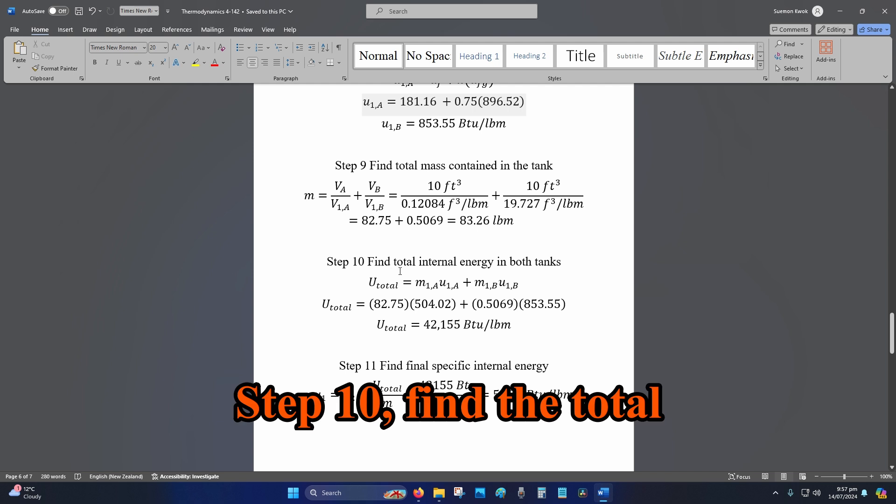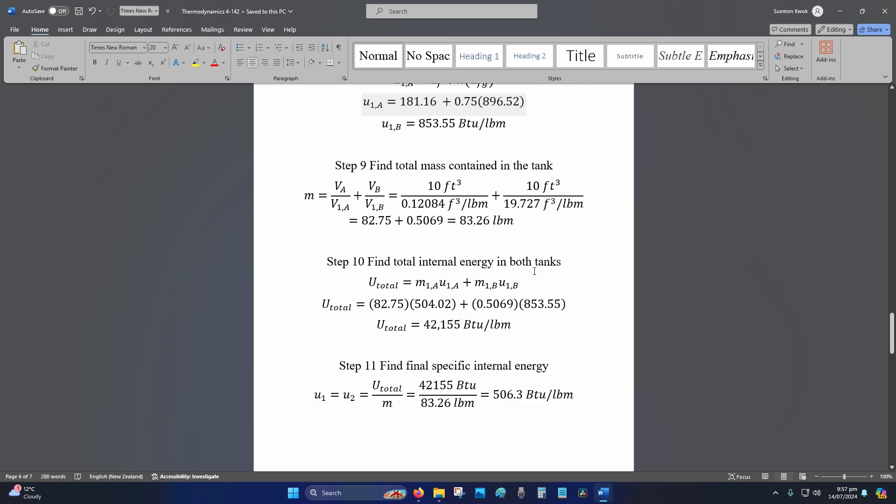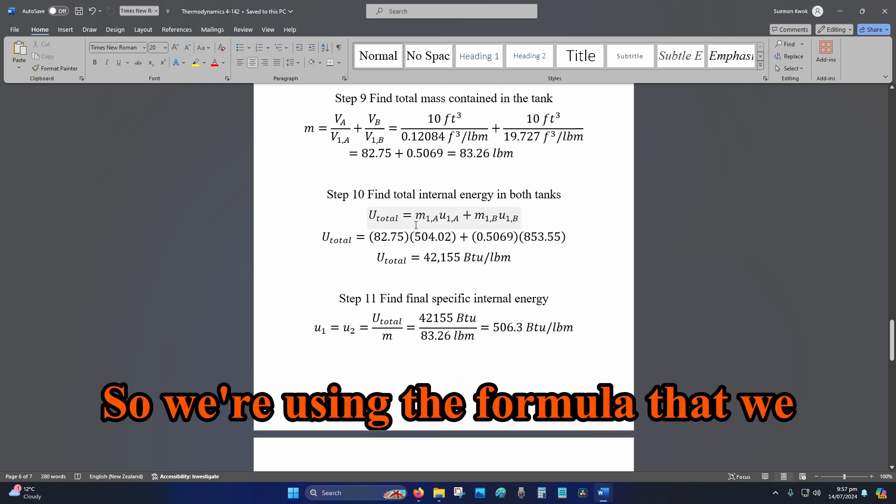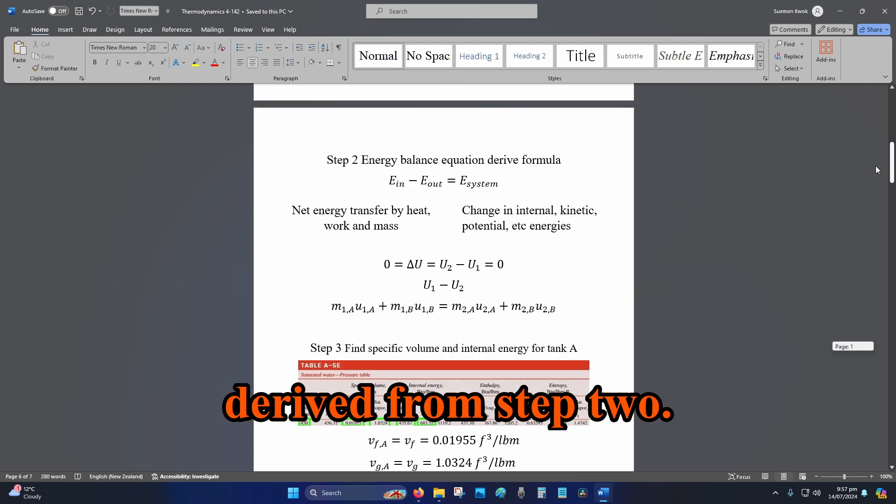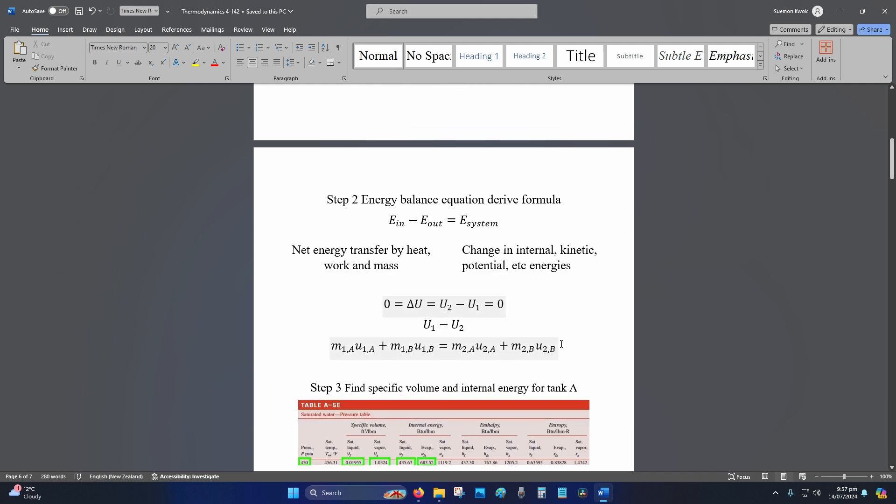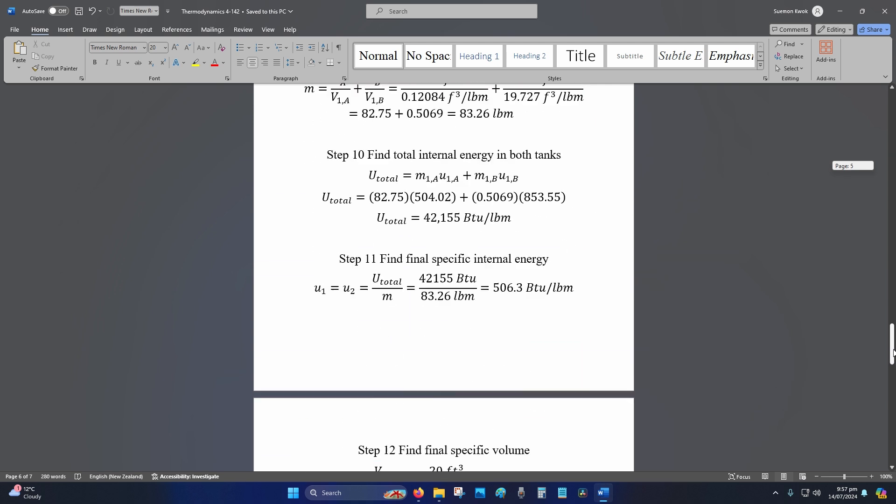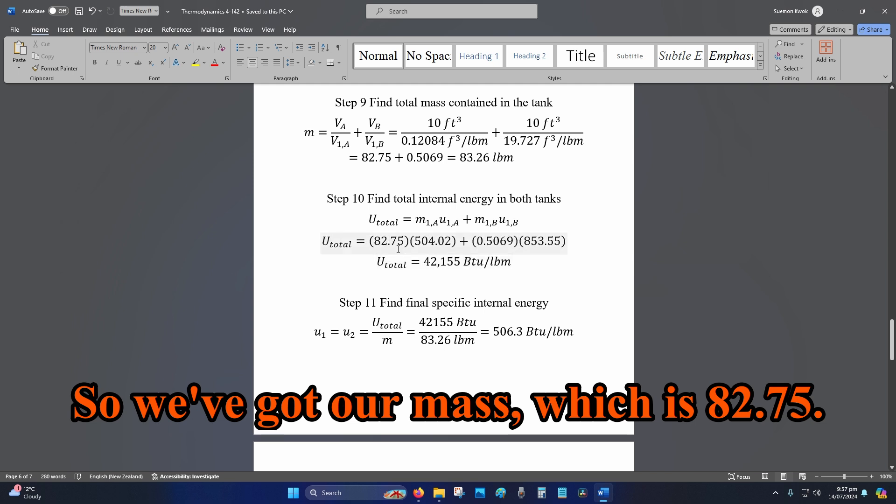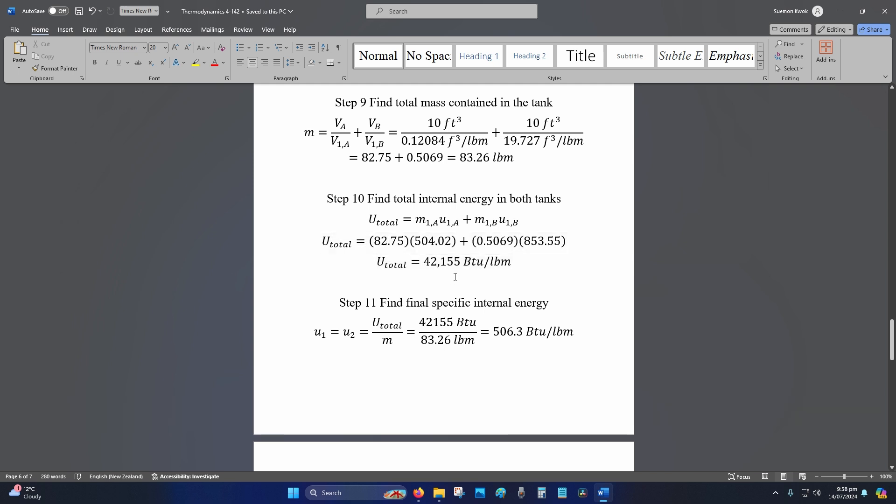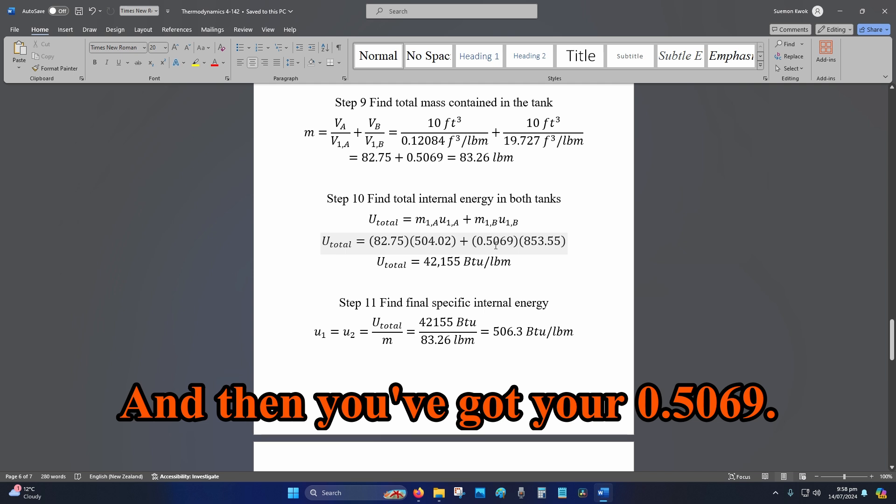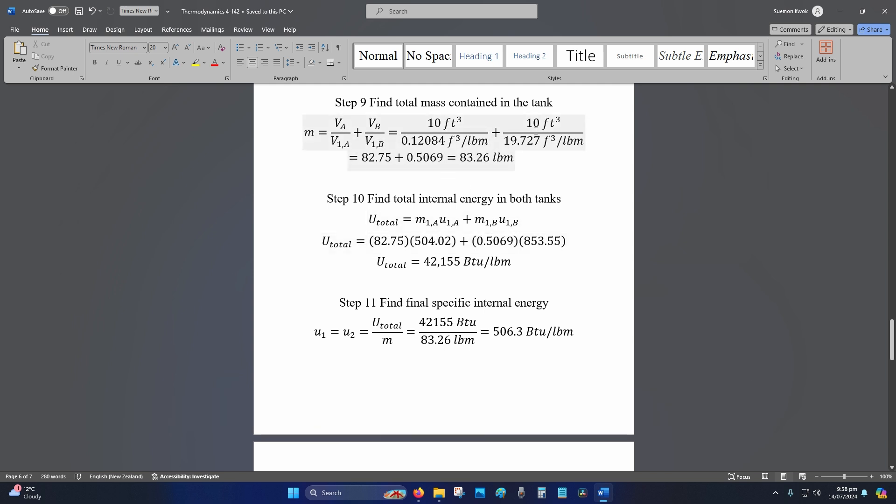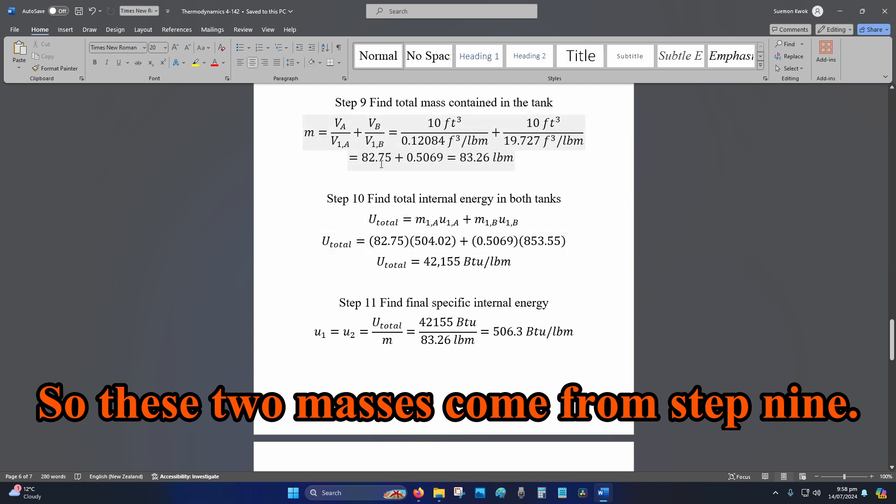Step 10, find the total internal energy in both tanks. So, we're using the formula that we derived from step 2. So, we're just using this formula. Okay. So, we've got our mass, which is 82.75. So, where did this come from? This is over here. So, that is that combination. And then you've got your 0.5069. So, these two masses come from step 9.